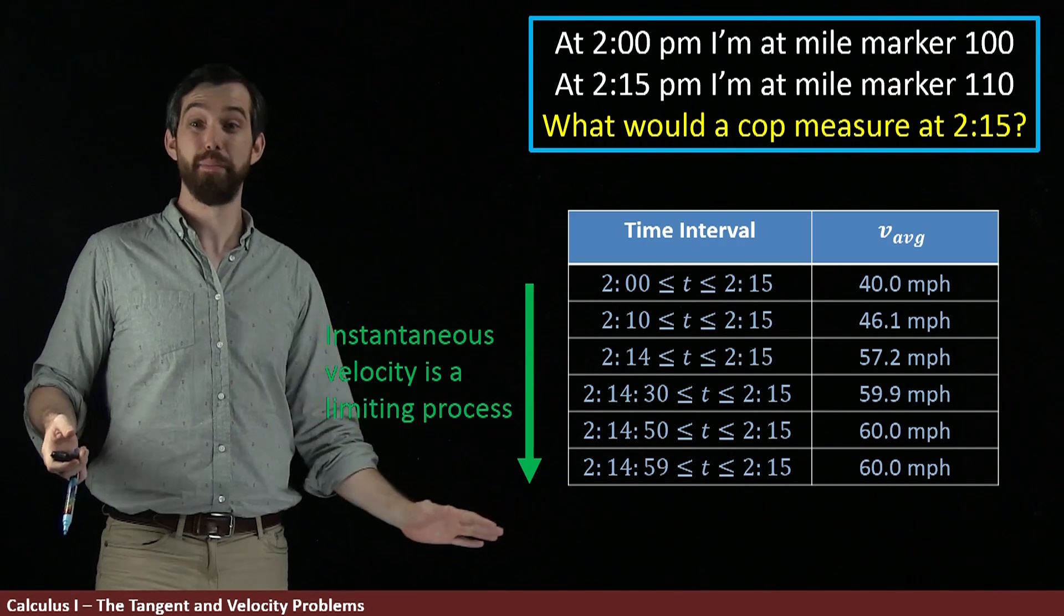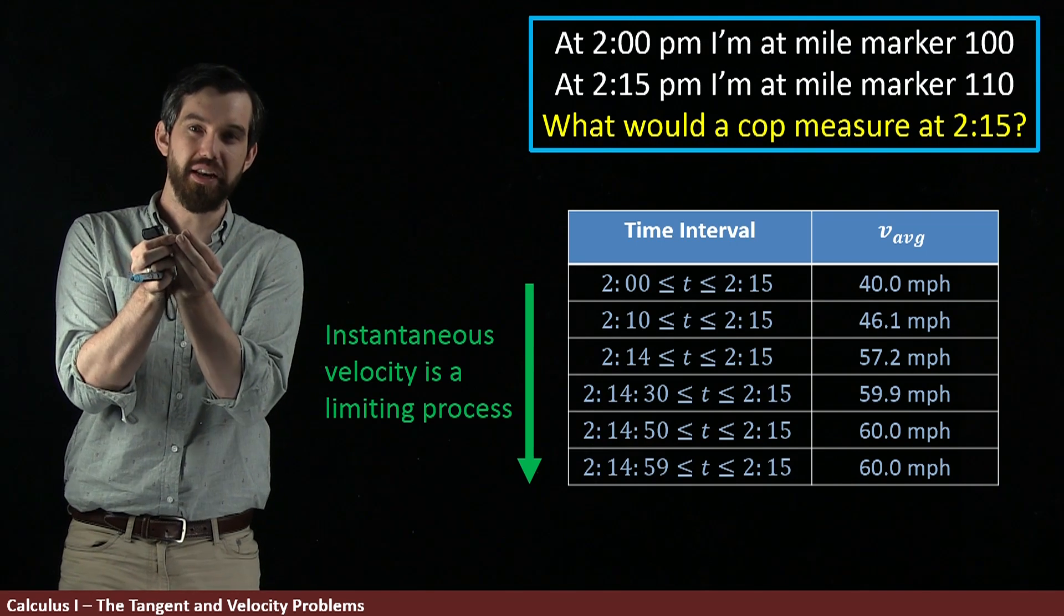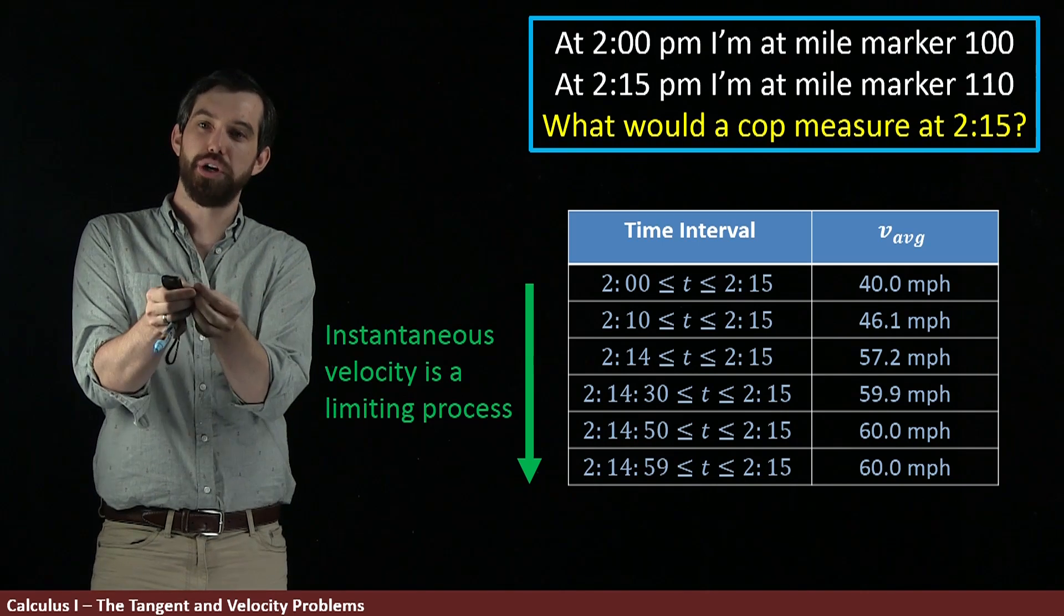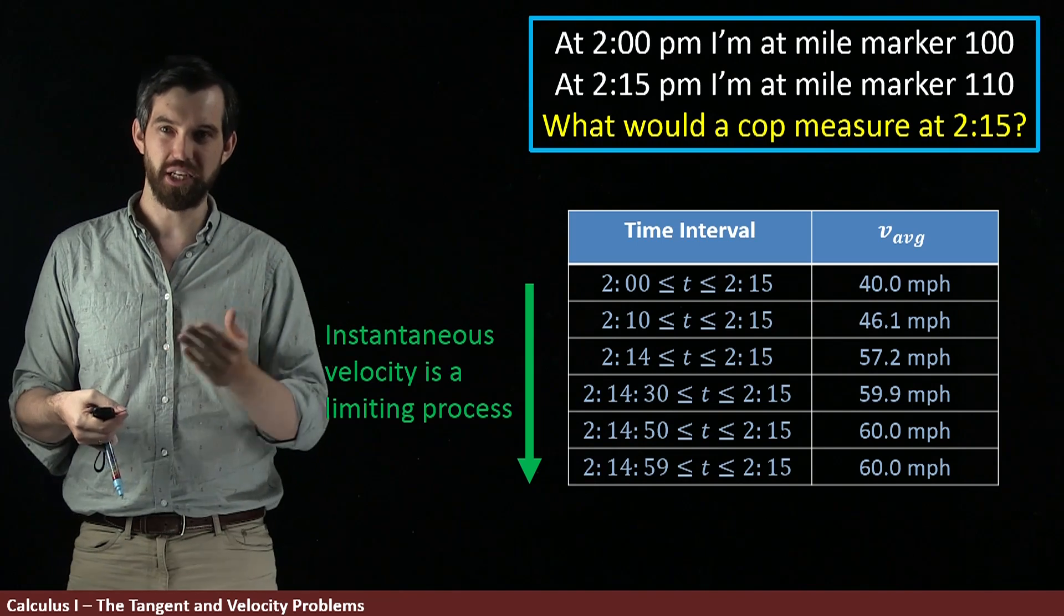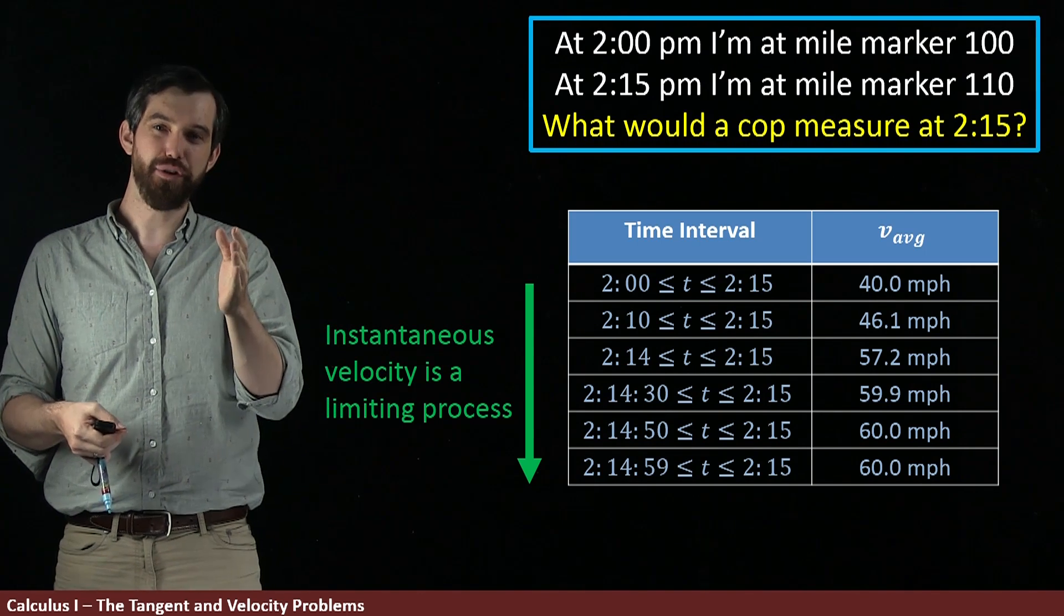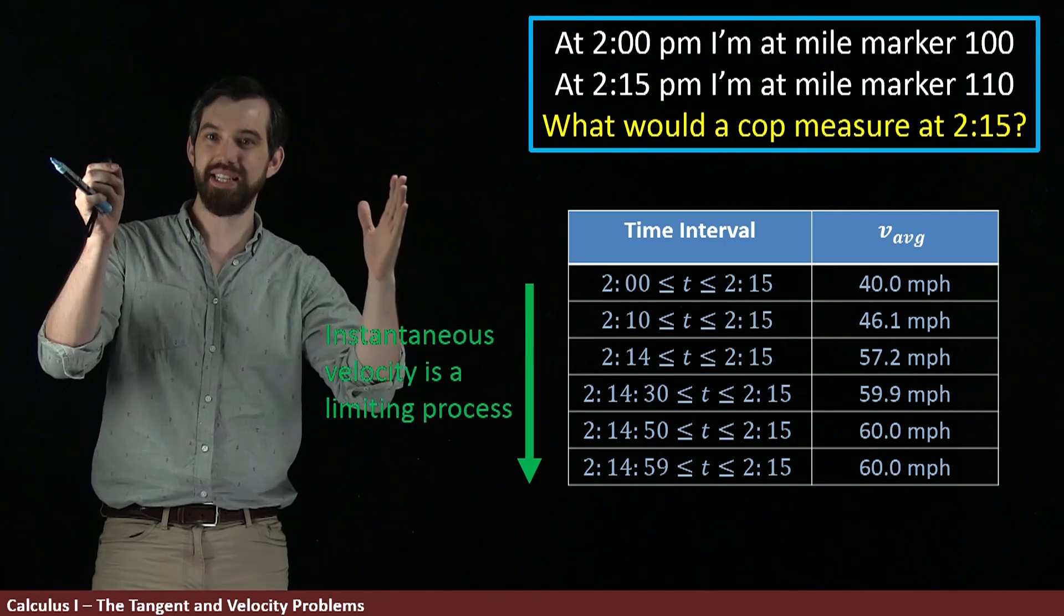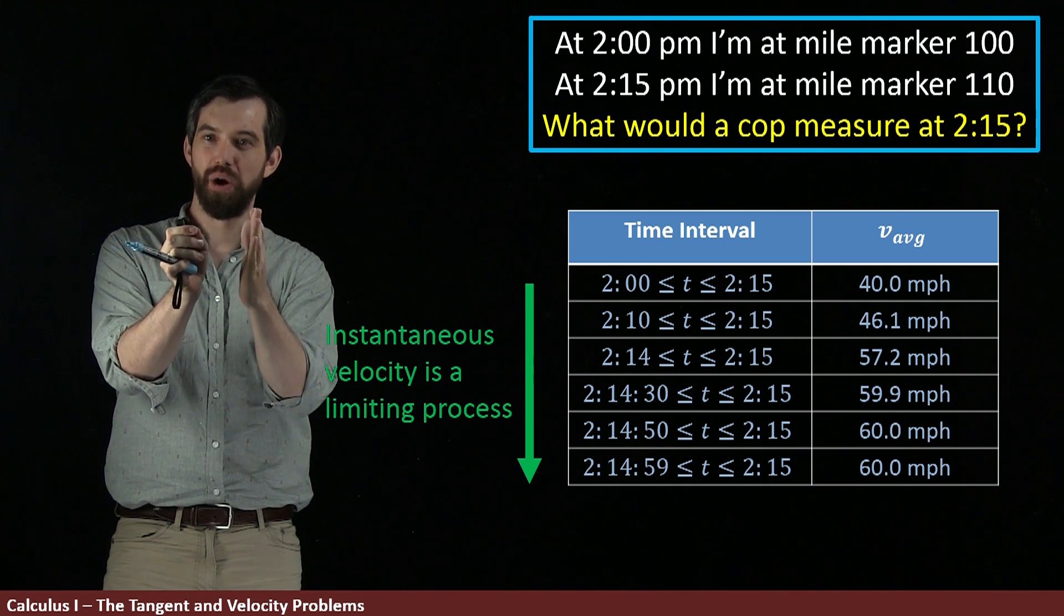And then you could imagine we could carry on if we had more accurate measurements, this table could carry on going perhaps forever as our intervals got closer and closer and closer to 2:15, and that our average velocities would presumably get closer and closer to some number. So we can think of instantaneous velocity, the velocity exactly at 2:15, to be analogous to the sort of limiting process as these average velocities are done over smaller and smaller and smaller intervals.